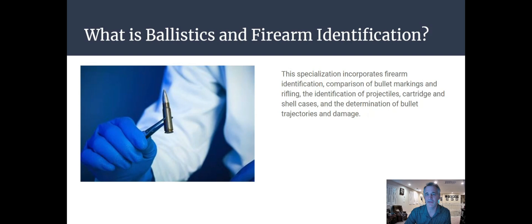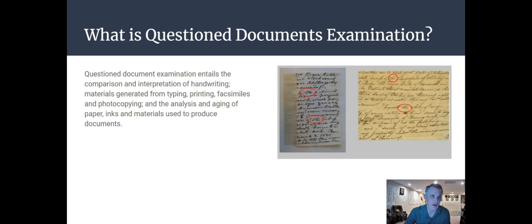Ballistics and firearm identification is a specialization that incorporates firearm identification, comparison of bullet markings and rifling, and the identification of projectiles, cartridges, and shell casings. They can look at a shell casing and determine if it came from a specific gun in a suspect's possession. Questioned document examination entails comparison and interpretation of handwriting, materials from typing, printing, facsimiles, and photocopying, as well as analysis of the aging of paper and inks. We sometimes do a chromatography lab on different types of inks to figure out which pen created which ink mark.